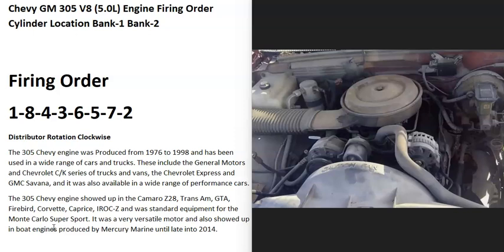And this is going to include many different Chevy GM vehicles. The 305 engine was produced between 1976 and 1998, and it came inside of many different cars, trucks, and vans.